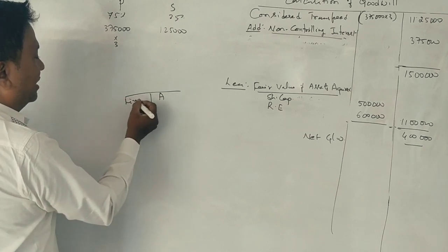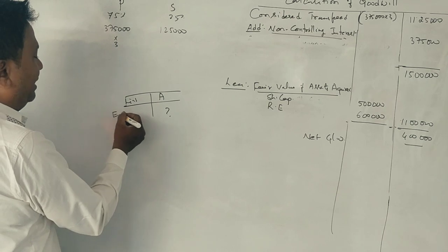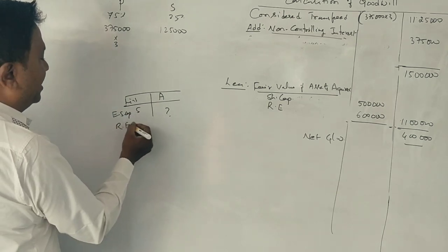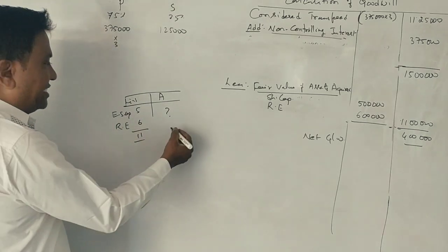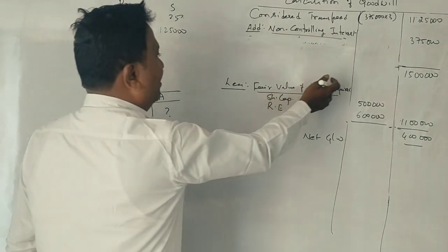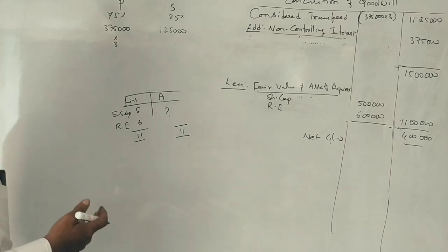On the liability side, equity share capital is Rs. 5,00,000 and retained earnings is Rs. 6,00,000, totaling Rs. 11,00,000. The fair value of assets equals the liabilities, which is the share capital and retained earnings.